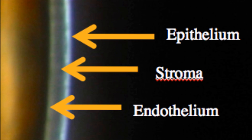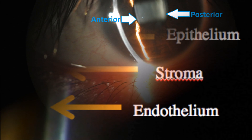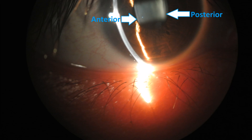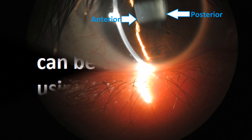Here we can see the three layers of the cornea: epithelium, stroma, and endothelium. From this picture, the anterior and posterior layers of the crystalline lens can be observed as well.